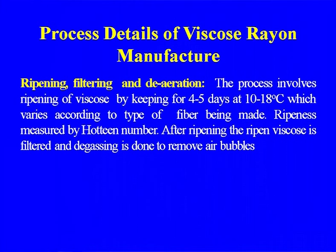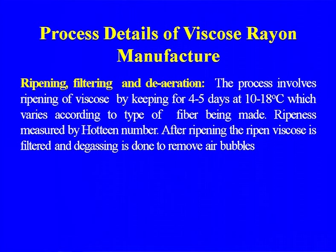The next step is ripening, filtering, and deaeration. The viscose is ripened by keeping it for 4 to 5 days at low temperature, which is an important requirement in viscose manufacture. Various types of fibers can be made depending on ripeness, measured by the Hottenroth number. After ripening, the viscose is filtered and degassed to remove air bubbles.